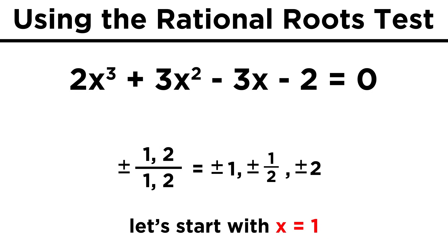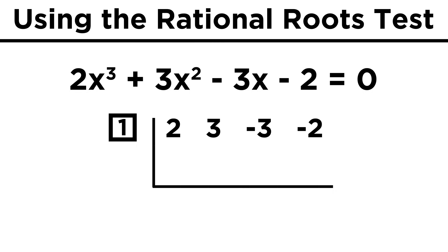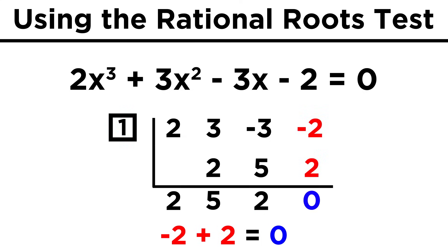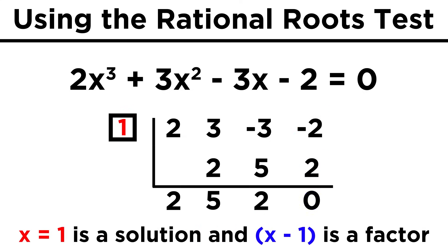Let's try and see if x equals one is a solution. We do our synthetic division by setting things up as we learned before, with the coefficients two, three, negative three, and negative two. We place the one here, drop the first two down, and get to multiplying and adding. One times two is two, three plus two is five, one times five is five, negative three plus five is two, one times two is two, and negative two plus two is zero. That means that one is indeed a solution. Remember, if this last digit was anything other than zero, then the number you are testing is not a solution — you can cross it out and try something else from the list.